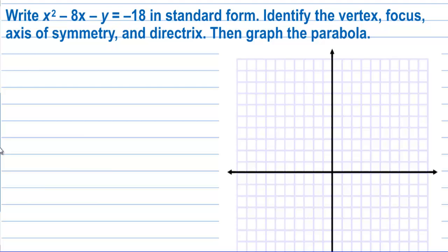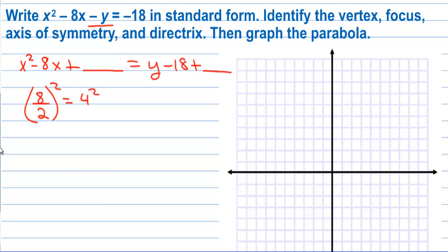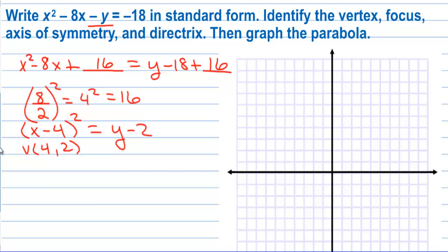Write x² − 8x − y = −18 in standard form. We complete the square on x. Move y to the right: x² − 8x + ___ = y − 18 + ___. Take b = 8, divide by 2, and square: 4² = 16. Add 16 to both sides. The left side factors to (x − 4)², and the right side gives y − 2. So the standard form is (x − 4)² = y − 2, and the vertex is (4, 2).